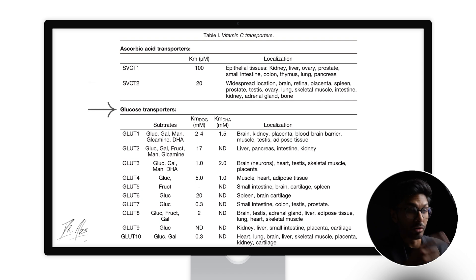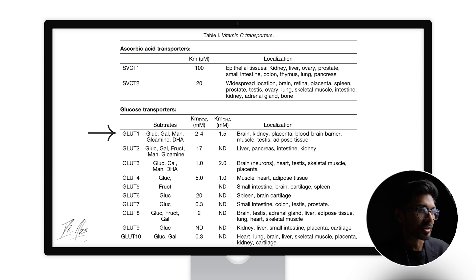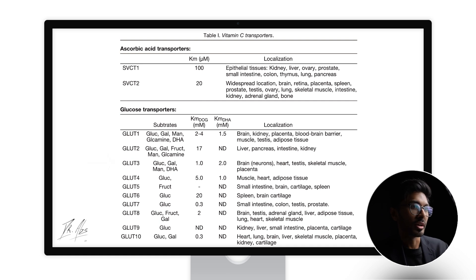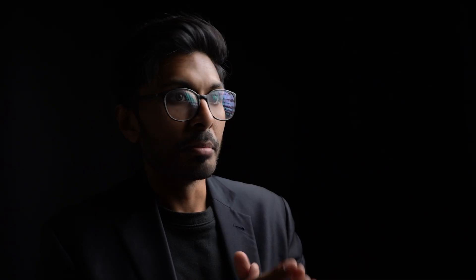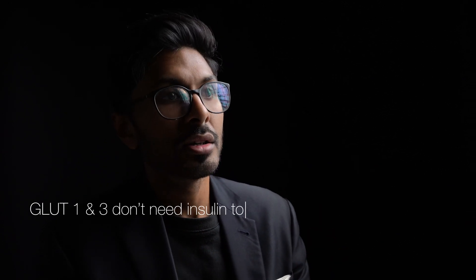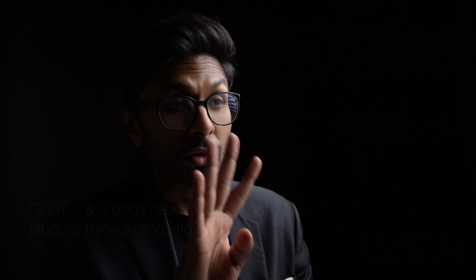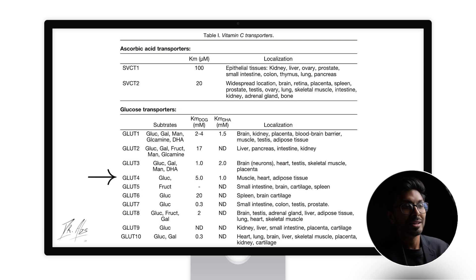For the glucose transporters, GLUT1, 3, and 4 also have differences. GLUT1 is pretty much everywhere and heavily takes in glucose. GLUT3 is highly expressed in neurons — which are nerves — and there's a really high affinity for glucose here, which massively minimizes the amount of vitamin C absorption when we eat carbohydrates. Interestingly, both GLUT1 and GLUT3 don't need insulin to get glucose into the cell. GLUT4, on the other hand, does need insulin, and it's found in places like fat and muscle.